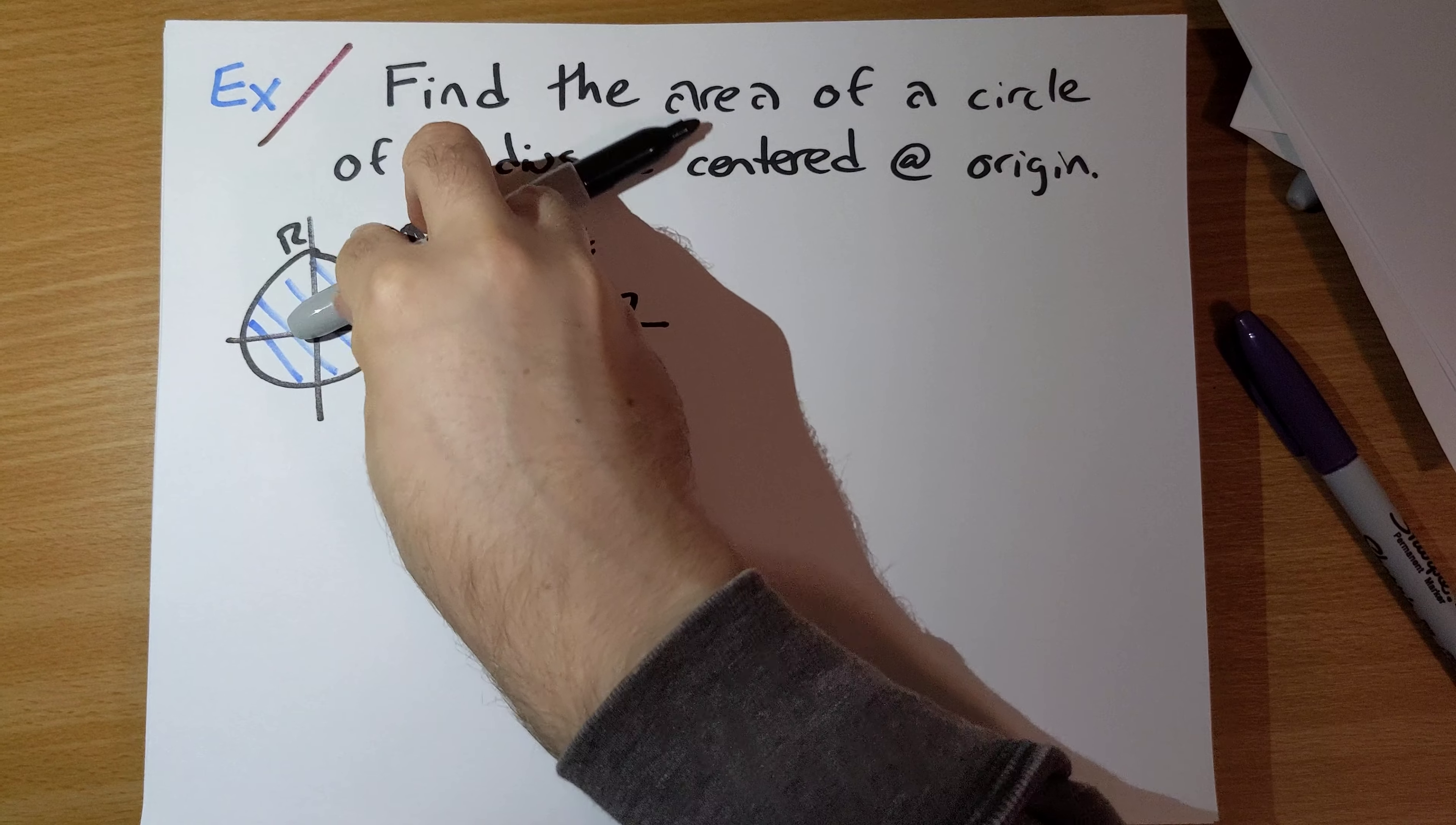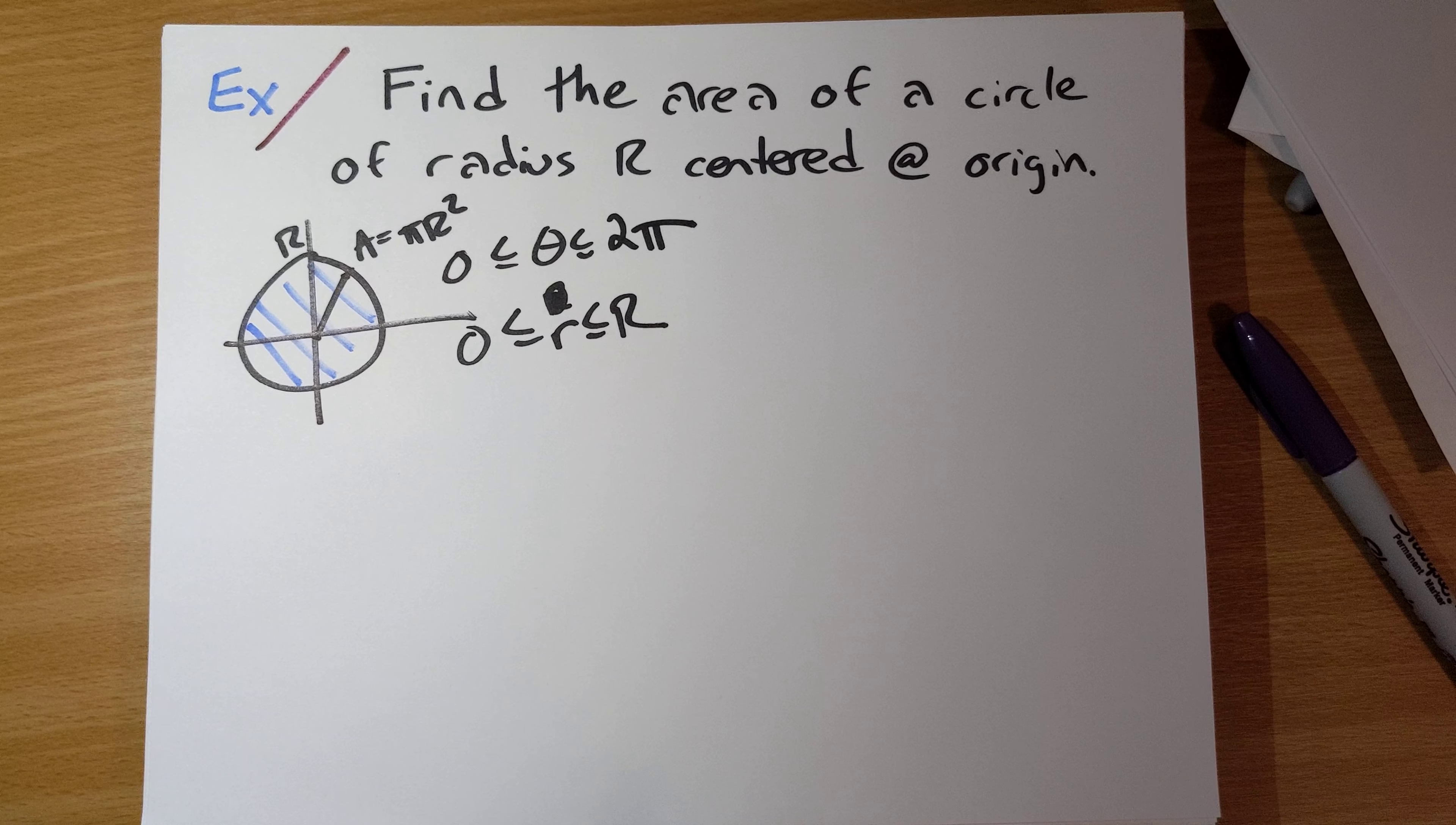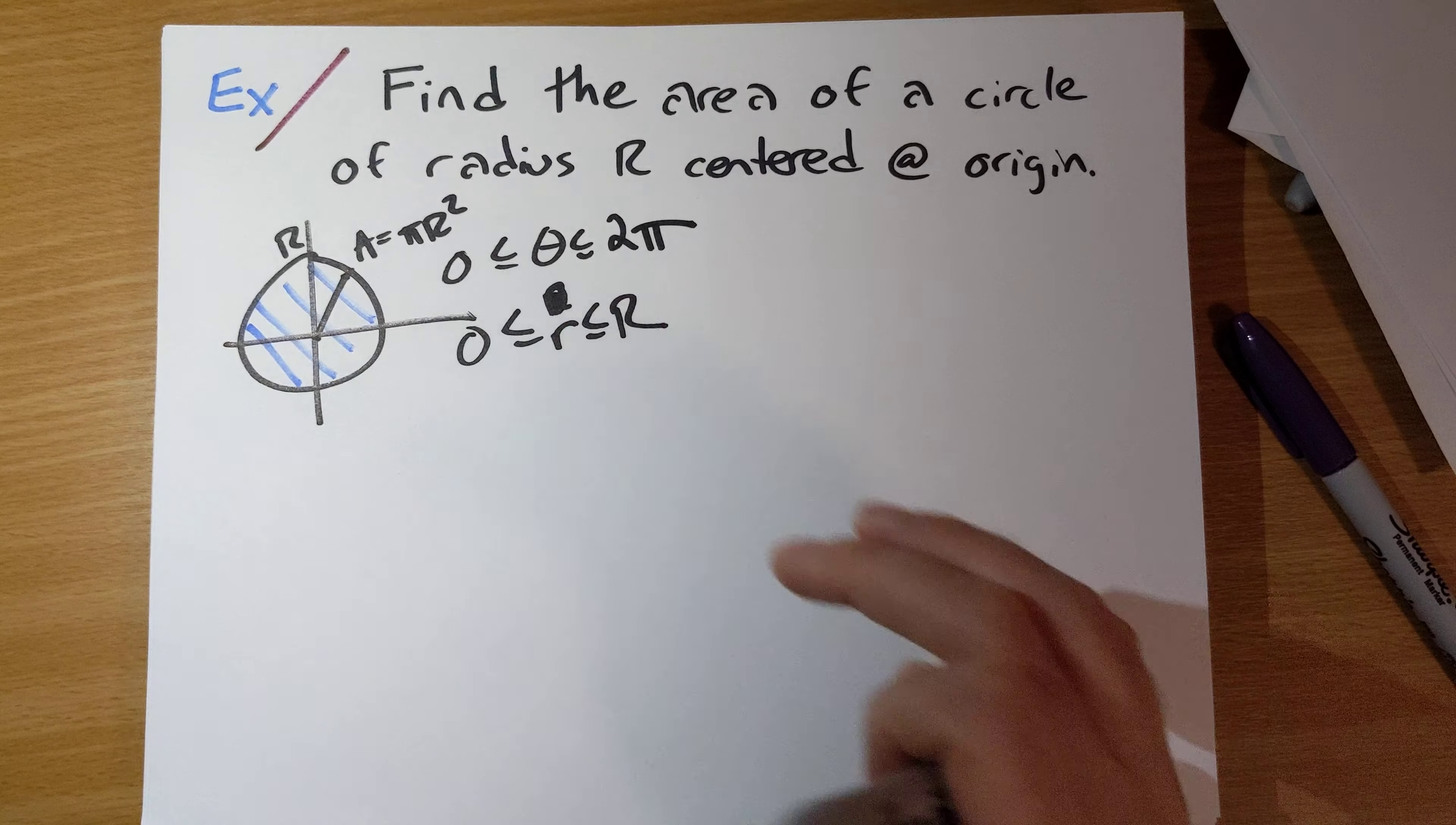And θ, we are going to do a full loop around the circle. So our natural bounds are 0 to 2π. So this is our bounds here.